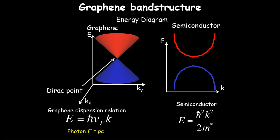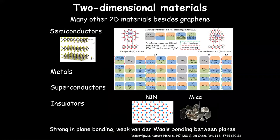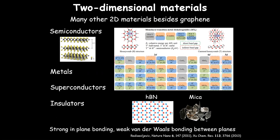Graphene is not the only two-dimensional material. There's actually a whole series of other 2D materials. Graphene is a semi-metal with massless Dirac fermions, but if we're interested in many other properties, we need to look beyond graphene. There are now probably over a hundred two-dimensional materials — everything from semiconductors to metals, superconductors, and insulators. In the semiconducting materials, we have things like molybdenum disulfide, with band gaps on the order of one to two electron volts. There are superconductors like niobium diselenide, which undergoes a superconducting transition around seven or eight Kelvin.